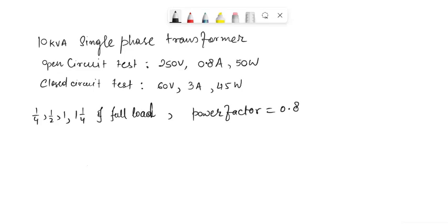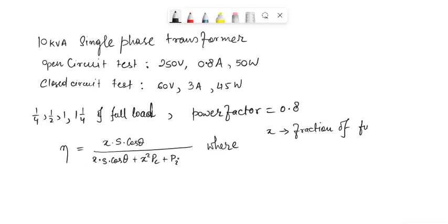The most general formula of the efficiency of a transformer is given by η in terms of percentage: η equals x times s times cos θ divided by x times s times cos θ plus x squared pc plus pi, where x is the fraction of full load and s is the VA of the transformer.